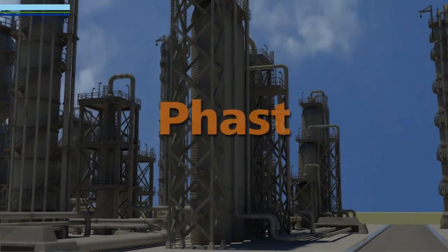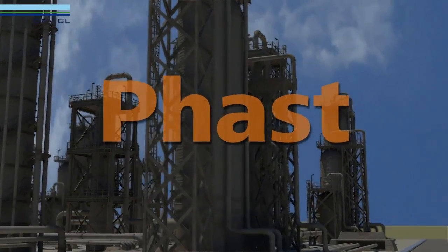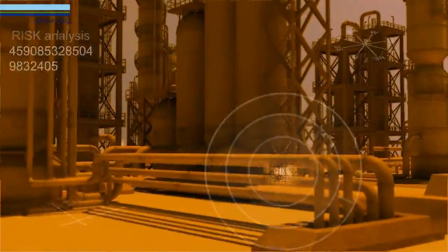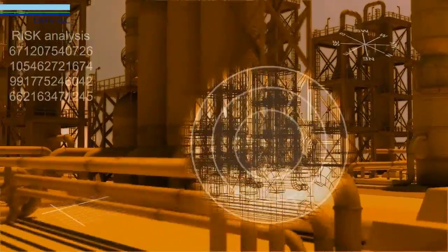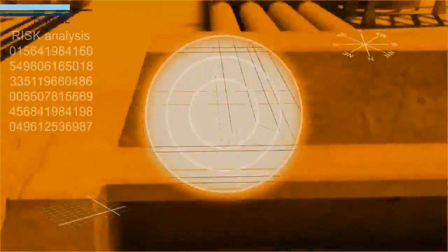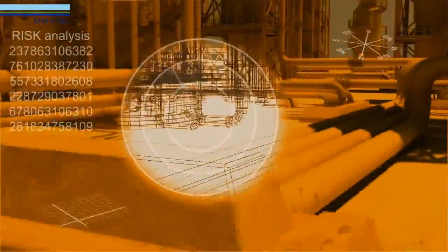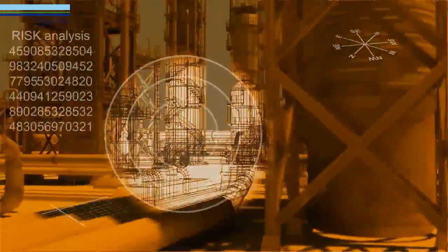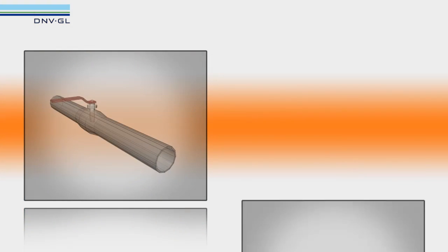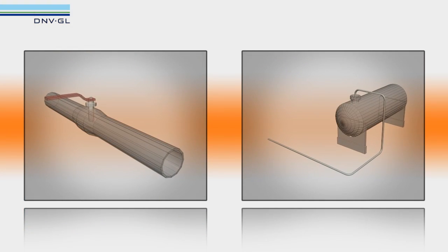Using FAST from DNV Software, we can perform extensive consequence analysis to investigate and understand our potential losses. What would happen if this pipework connected to a pressurised storage tank failed, resulting in a leak?